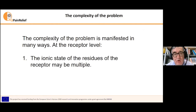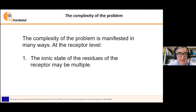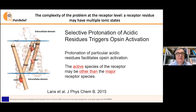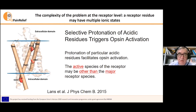But the problem is more complex than just a simple bimolecular drug-receptor interaction. For instance, there can be different receptor ionic species because some residues of the receptor can display different ionic states. This variability can be related with receptor activation. It may happen that the receptor active species is not the major receptor species, but a minor one. We analyzed this problem with a receptor of light and found that protonation of some acidic residues favors receptor activation.